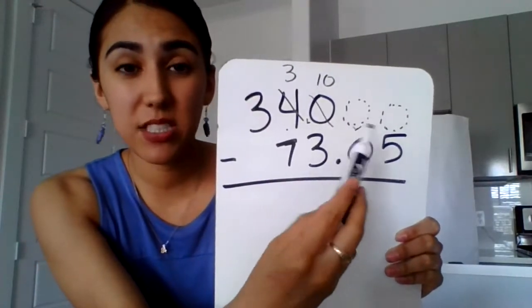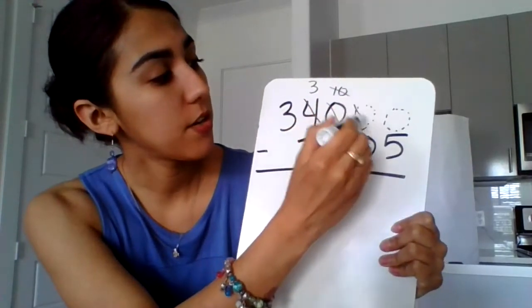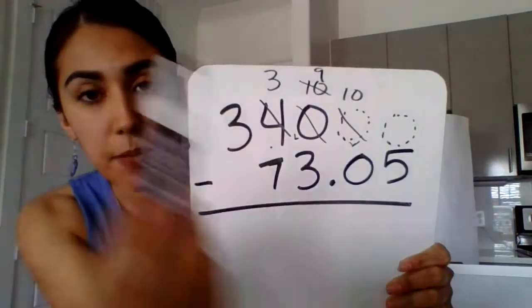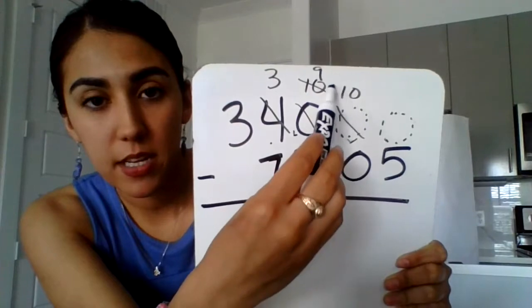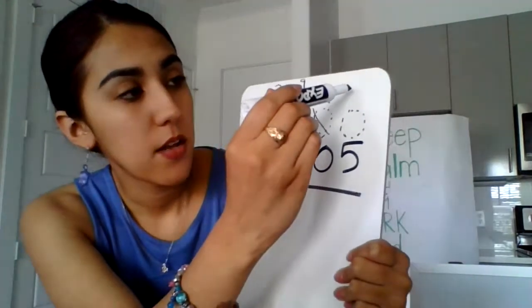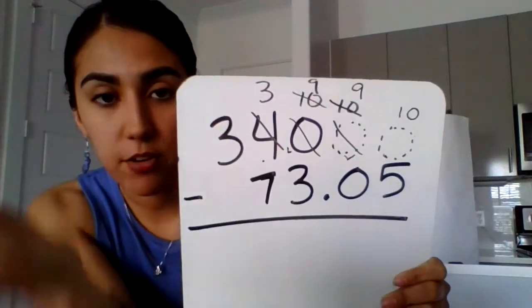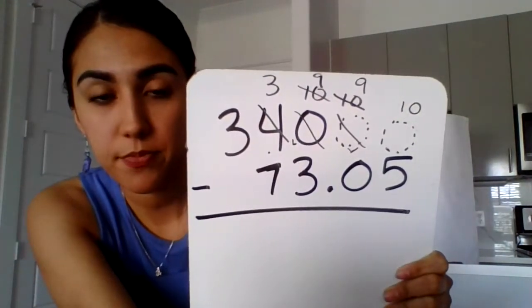But these zeros, these two zeros still need some. So this 10 is going to give 1 to his next door neighbor. So that becomes a 9. This becomes a 10. He's going to give 1 to his next door neighbor. And these are the numbers that you should have on top. 10, 9, 9, 3.